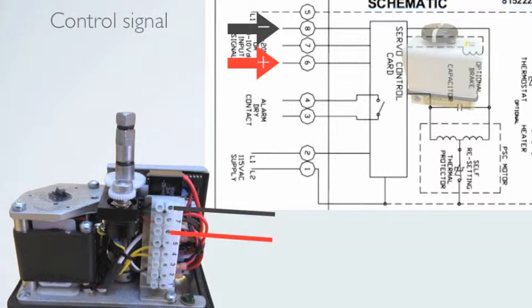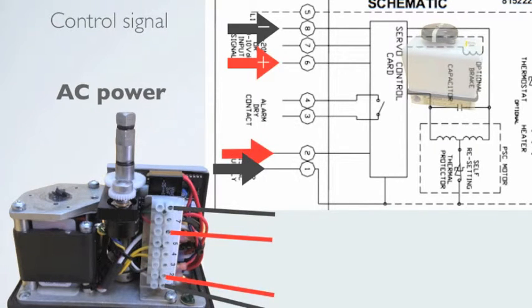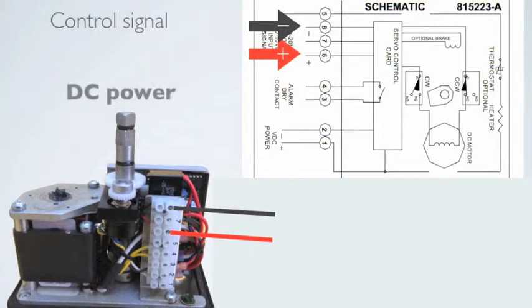Now wire your supply power to the unit. For AC units, put the neutral on number 1, the hot on number 2. For DC units, put the positive DC on number 1, the negative DC on number 2.